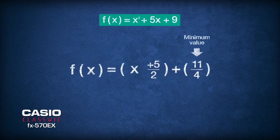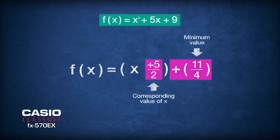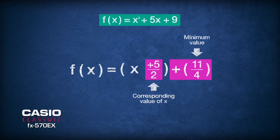The minimum value is equivalent to the constant at the back of the completed square form, which is positive 11 over 4, while its corresponding value of x is the negative of the number in the big squared bracket, and that would be negative 5 over 2.